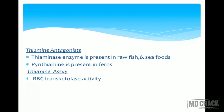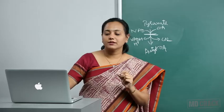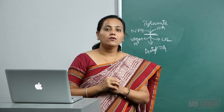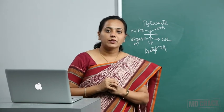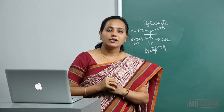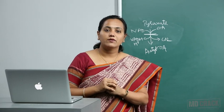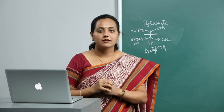Thiamine antagonists include thiaminase (present in raw fish and seafood) and pyrithiamine (present in ferns). Thiamine levels are detected by measuring RBC transketolase levels (erythrocyte transketolase activity). This concludes thiamine (vitamin B1) and vitamin C; in the next session, I'll cover the other vitamins.